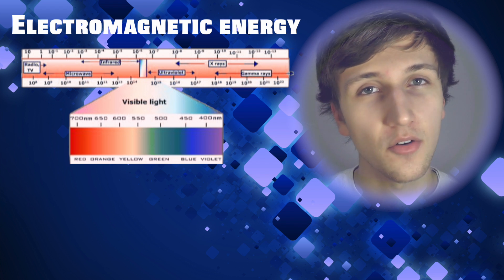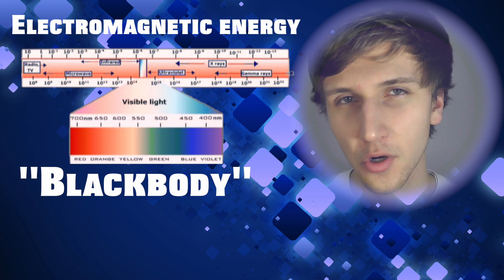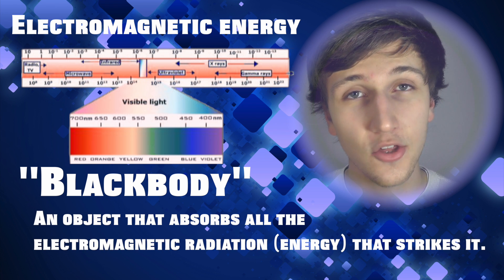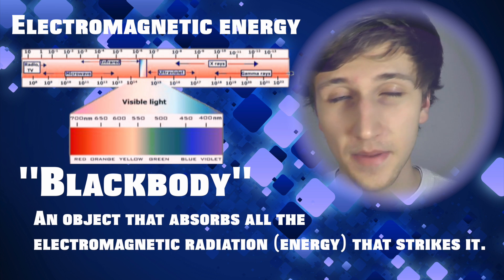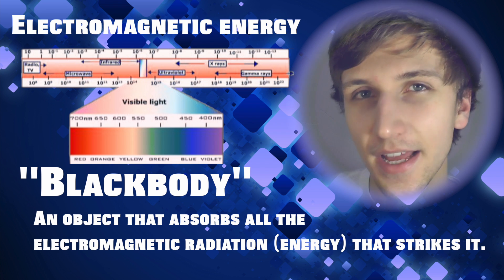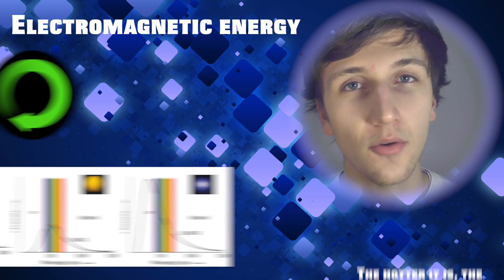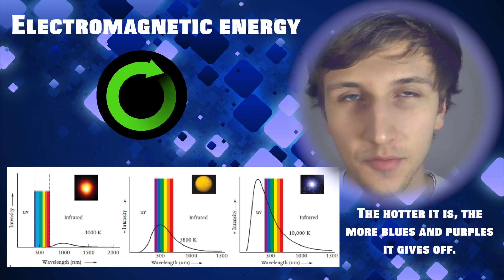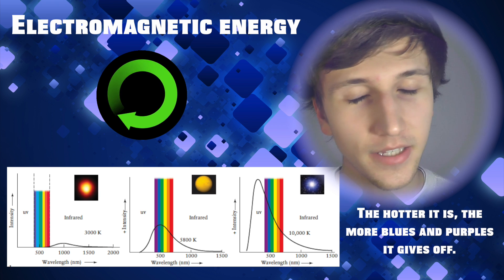That said, if we look at what is known as a black body, an object that absorbs just about all the electromagnetic radiation that strikes it, stars being a good example, we find that as they are heated up by incoming radiation, they re-emit energy at different intensities of electromagnetic energy, including visible light.